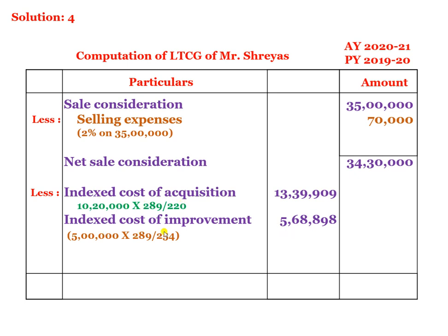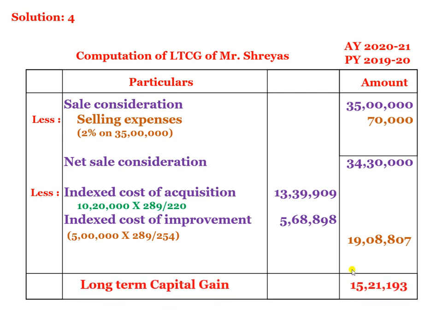For long-term capital gain, we apply both indexed cost of acquisition and indexed cost of improvement. Adding them: total indexed cost is 19,08,807. Net sale consideration 34,30,000 minus total indexed cost 19,08,807 gives us long-term capital gain of 15,21,193. This is a simple problem. I conclude today's session. Thank you.